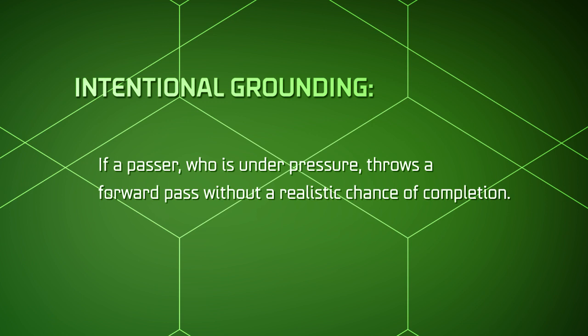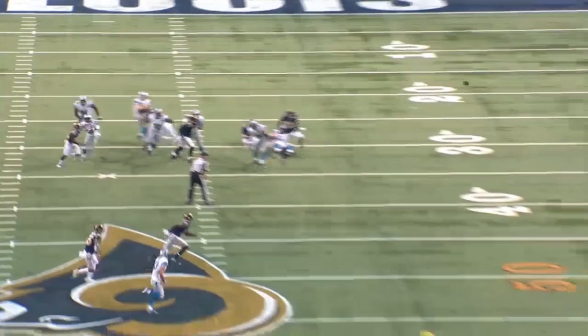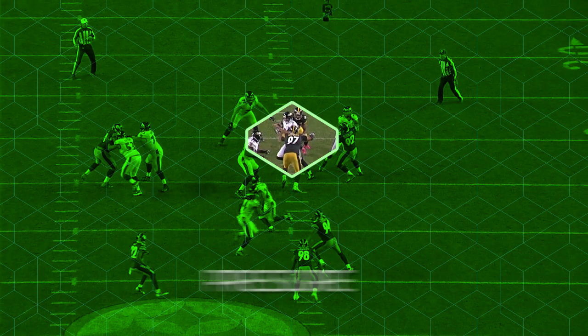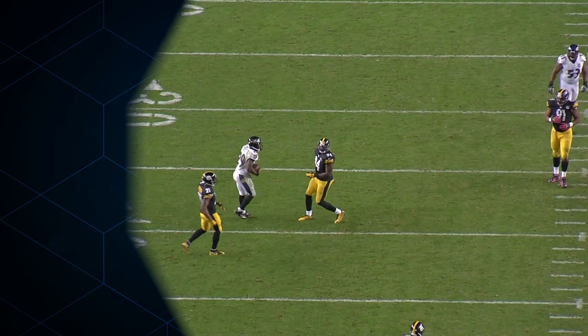It is a foul for intentional grounding if a passer who is under pressure throws a forward pass without a realistic chance of completion. A realistic chance of completion is defined as a pass that is thrown in the direction of and lands in the vicinity of an originally eligible receiver.